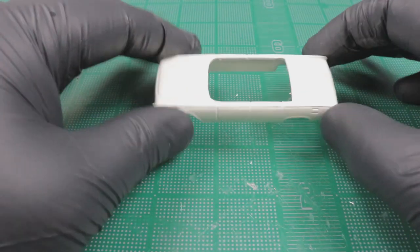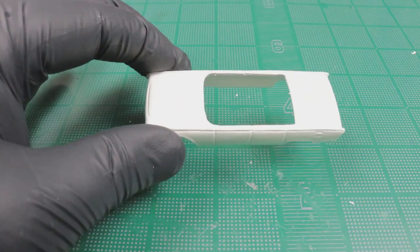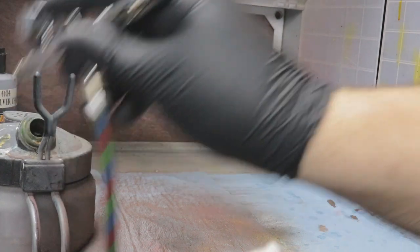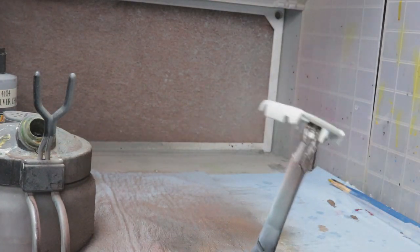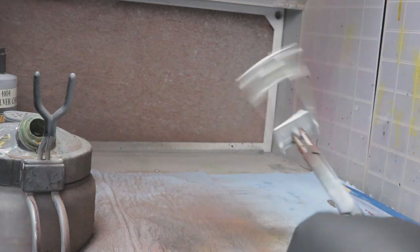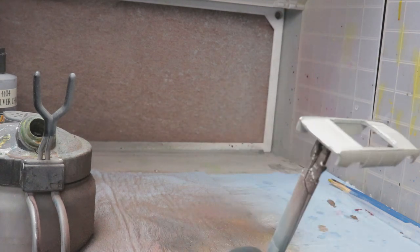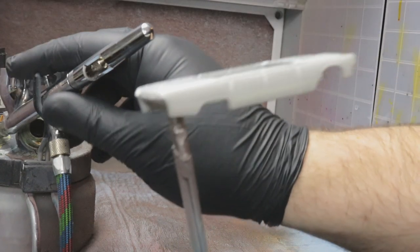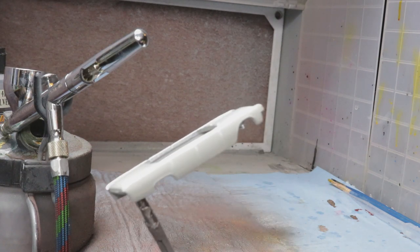All right, the body is nice and clean. So now the first thing I want to do, we're going to put a layer of Quicksilver Chrome over top of this. It's hard to tell, but it kind of looks like a pearl white now.